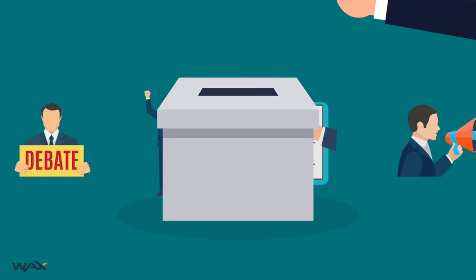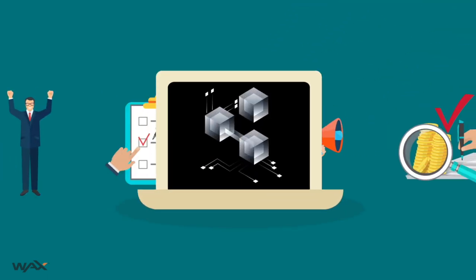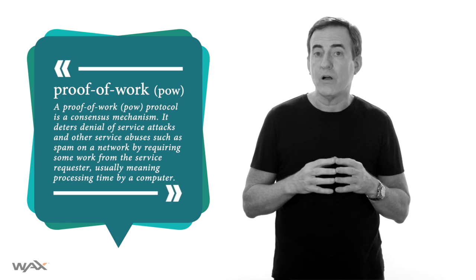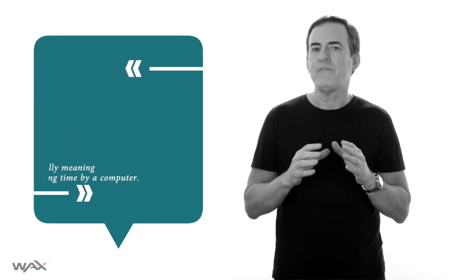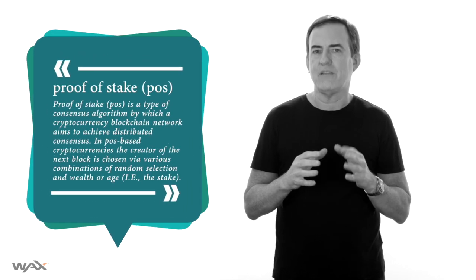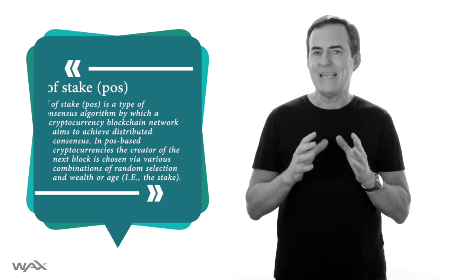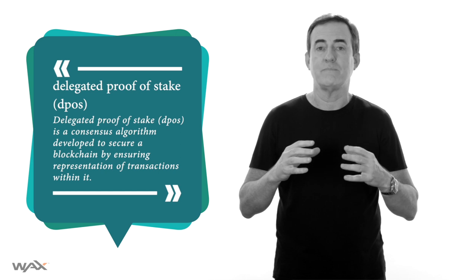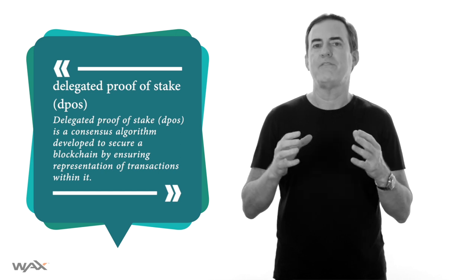All of these voting issues exist in the blockchain space as well, but the problems are amplified by the highly technical subject matter and the unfriendly tools you need simply to cast your vote. We could run through a whole episode about the voting problems of proof-of-work protocols, but instead I want to focus today on proof-of-stake voting — specifically delegated proof-of-stake voting, or DPoS, or what I like to call democratic proof-of-stake.